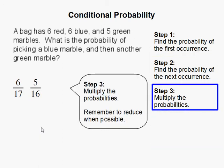Step 3: Multiply the probabilities. Remember to reduce when possible. We get 30 over 272, and this probability can be reduced to 15 over 136.